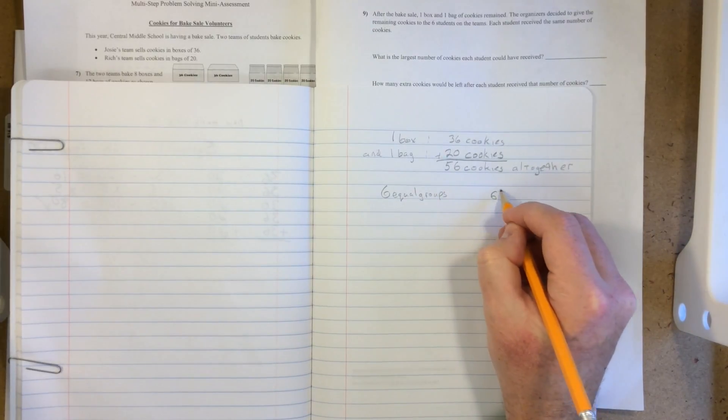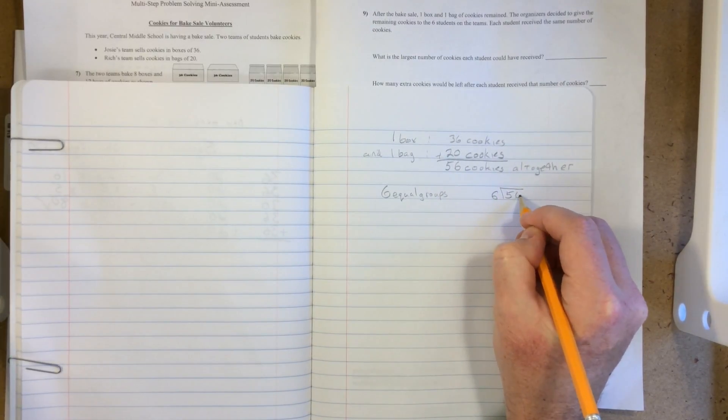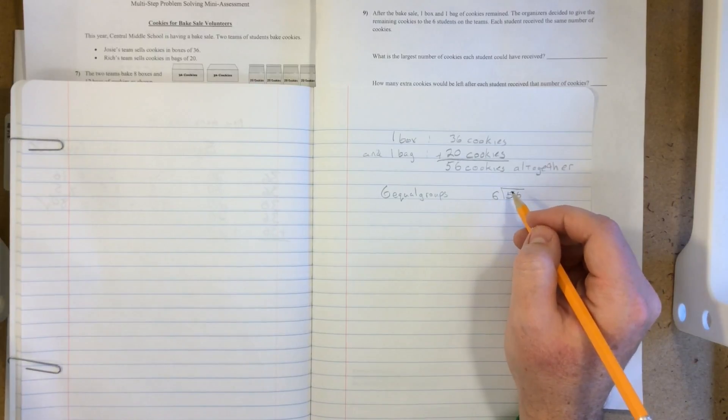When we look at that, 6 doesn't divide into 56 evenly, but we can still do this using a remainder.